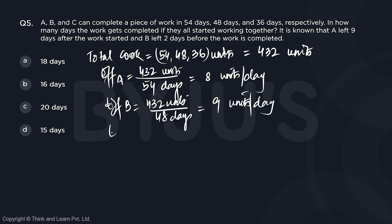And if you talk about efficiency of C, it's going to be 432 divided by 36 units per day. So this is going to give us 360 plus 72, that is 12 units per day.